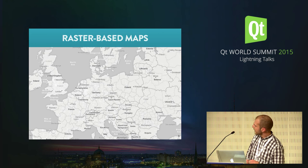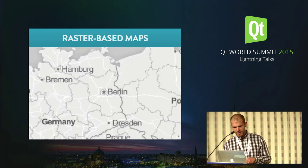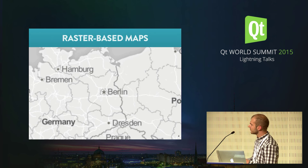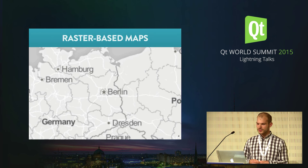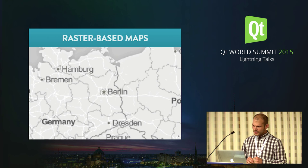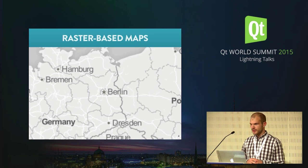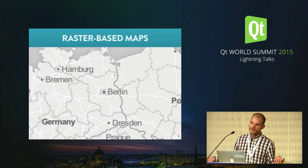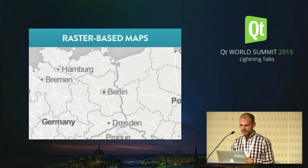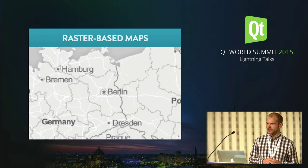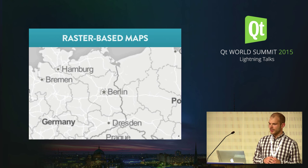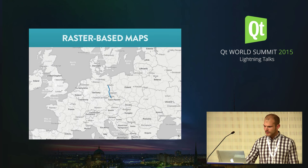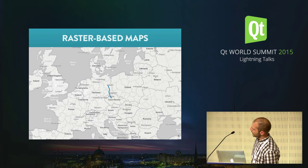Raster maps are pretty good because they have pretty high visual fidelity, but they also have lots of drawbacks. For example, they don't really scale very smoothly when you zoom in — they get very pixelated, so you have to load new data all the time. You can't really change the style sheet of the map, because if you do, you have to go back to the server and re-render everything. You can also embed that into your C++ application, but that'll make the application quite big, especially if you think about mobile.